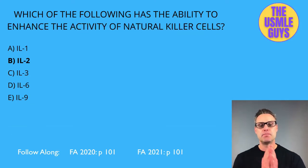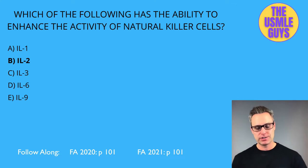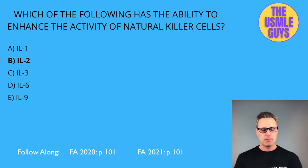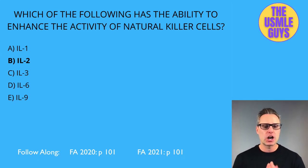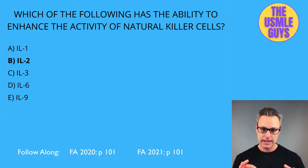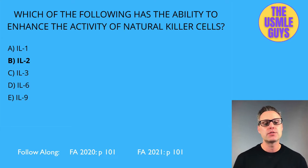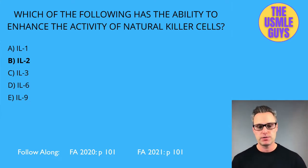The correct answer here is B, IL-2. Natural killer cells are classified as group 1 innate lymphocytes and they respond quickly. They function in killing infected cells and can detect and control cancerous cells very early on. They perform their killing using granzymes and perforin, which induce apoptosis.